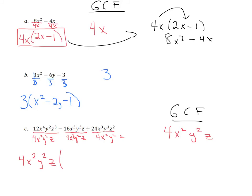Let's take it one step at a time. 12 divided by 4 is 3. x to the 4th divided by x squared — subtract the exponents, 4 minus 2 — gives us x squared. y squared divided by y squared cancels out. z to the 3rd divided by z to the 1st — subtract exponents, 3 minus 1 — gives us z squared. For the second term: negative 16 divided by 4 is negative 4. x squared over x squared, y squared over y squared, and z over z all cancel out, so all we have for that term is negative 4.